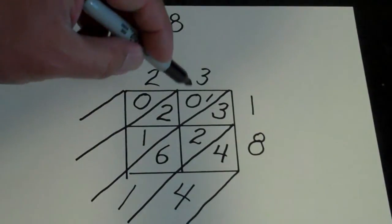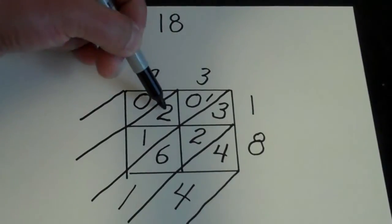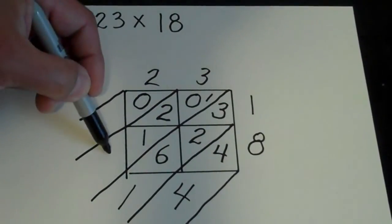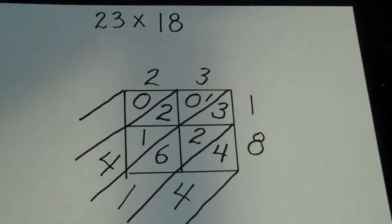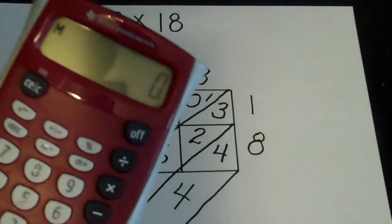So now I'll go 1 plus 0 is 1, plus 2 is 3, plus 1 is 4. And there's a 0 here, so I don't need to bother putting a 0 there. So the answer is 414.